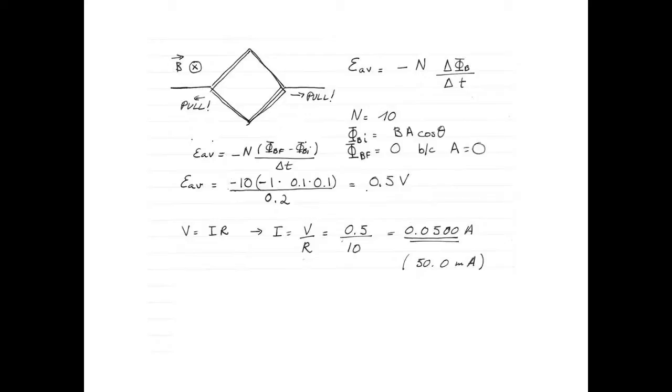And to find the direction of the induced current, we now need to consider the change in magnetic flux. The initial magnetic field points into the page. The flux decreases, because the area decreases. That means the amount of magnetic field through our loop decreases.